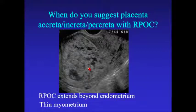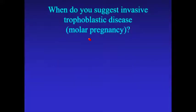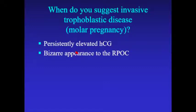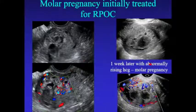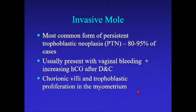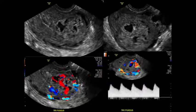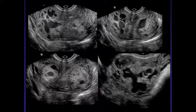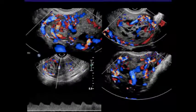On placenta accreta: mention it when you see thin myometrium. For invasive trophoblastic disease or molar pregnancy, we're not very good at this — it's a patient with a bizarre appearance to the retained products and a persistently elevated beta-HCG. You can see very heterogeneous material after a D&C with lots of abnormal blood flow. Invasive moles are the most common type of persistent trophoblastic neoplasia, and we usually see this incidentally after a D&C. These cases appear very heterogeneous, very abnormal, and very vascular.